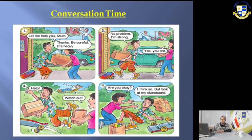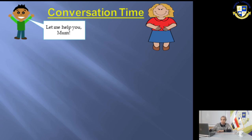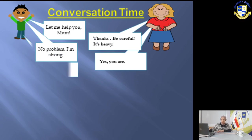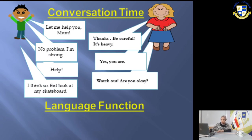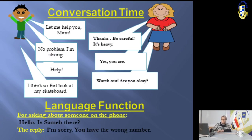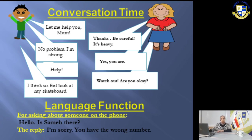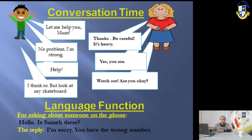Now let's look at the language function for asking about someone on the phone. When you call someone on the phone, you say: 'Hello, is Sam there?' If it's the right number, the answer will be: 'Yes, just a moment please.' But maybe it's a wrong number, so the answer should be: 'I'm sorry, you have the wrong number.'